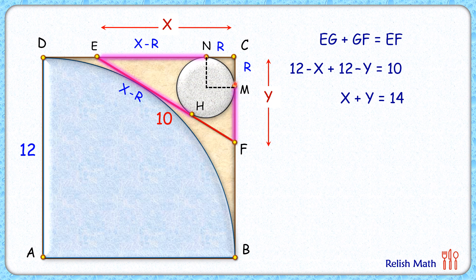Same way if we check the length FM, FM will be y minus r. And FM and FH, these are two tangents drawn, so FH will be the same, y minus r. Now let's compare the total length EF which is EH plus HF.